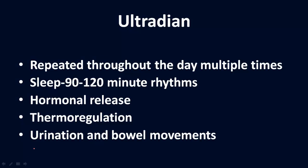Finally, ultradian rhythms are repeated throughout the day multiple times. This includes the sleep cycle — the 90 to 120 minute rhythms we have while sleeping. Hormonal release is also part of this; certain hormones are released at different times of the day in a pretty consistent pattern among most humans. Thermoregulation is another example — we tend to be colder at some parts of the day and warmer at others, and that is an ultradian rhythm.